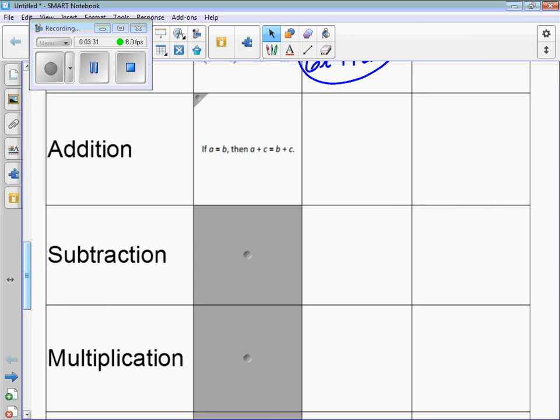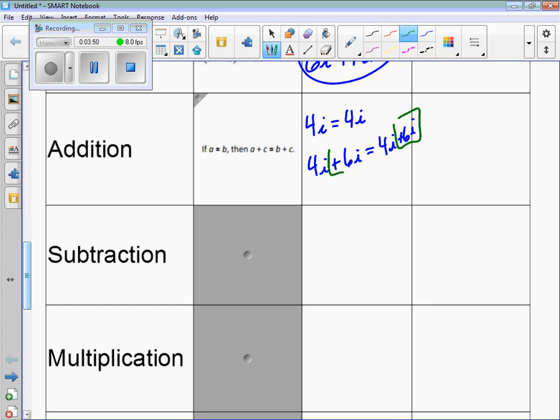Addition: so if a equals b, like if 4i equals 4i, if I add a number to 4i on the left side, like 6i, then add to the other side, that's addition. So by adding the same number to both sides, that's the addition property.